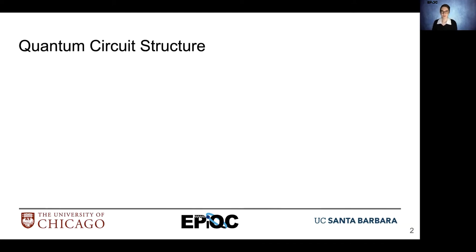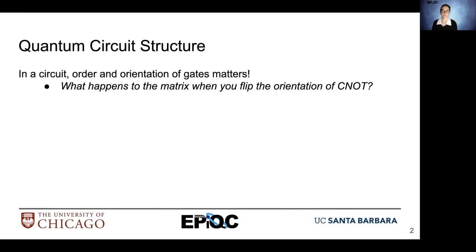Quantum circuit structure can vary, and when we look at the circuit, the orientation of gates and their order matters. So what happens to the matrix for a gate if it's flipped? For example, let's take a CNOT gate and exchange the control and target.